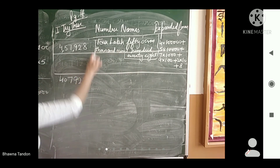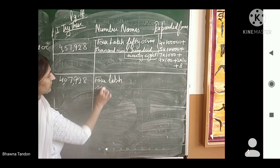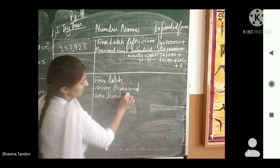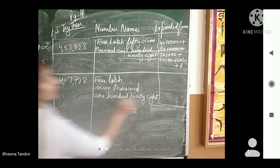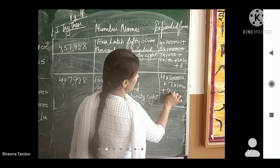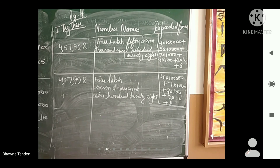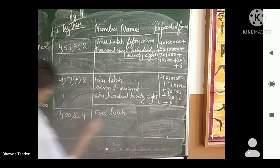The second number — let us write the number name for this. This is 4,07,928: four lakh seven thousand nine hundred twenty-eight. The third number is 4,08,029: four lakh eight thousand and twenty-nine.